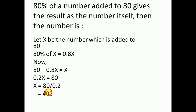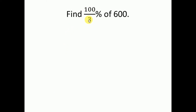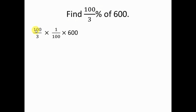The second problem: find 100/3 % of 600. Yeh question bahut repeat ho chuki hai aur is ke related ek question zaroor quantitative portion mein aata hai. Jahan par bhi percentage sign aaye, percentages ki jagah par 1 divided by 100 laga dena hai. So: (100/3) × (1/100) × 600. This is a simple calculation and you will get the answer which is 200.